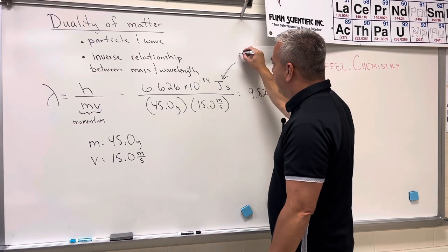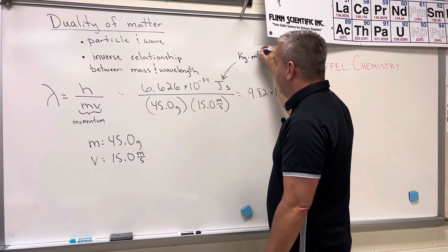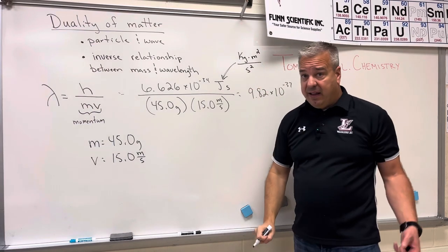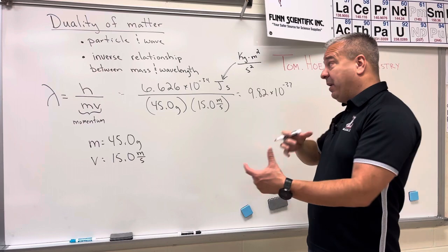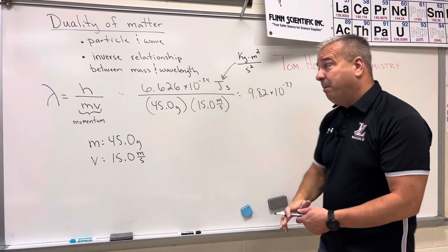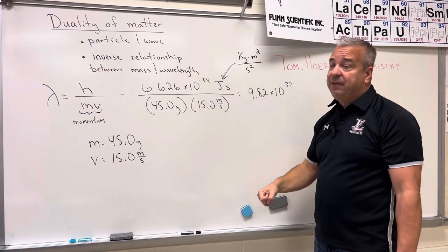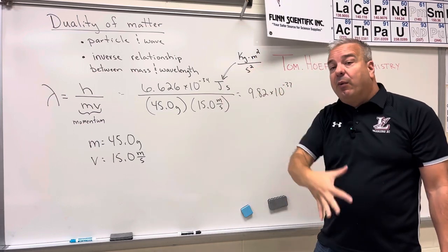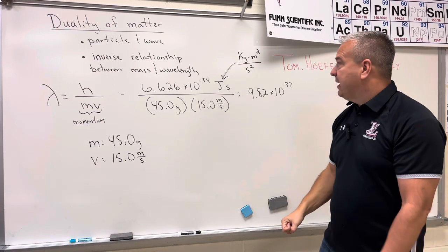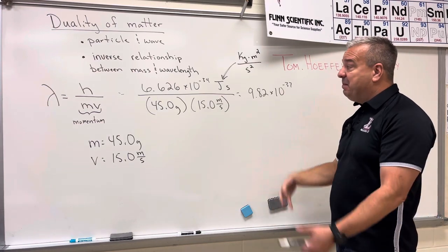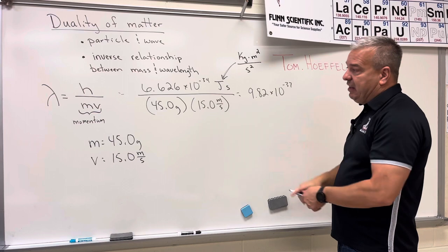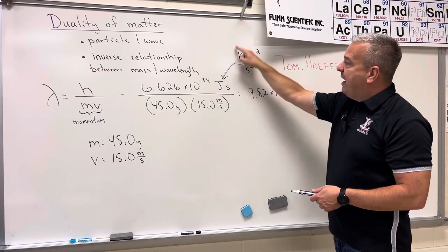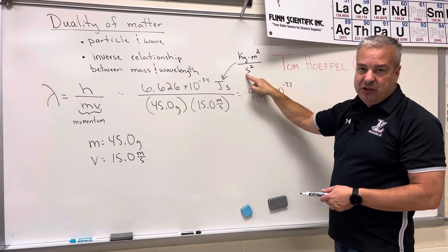So a joule is equal to a kilogram times meters squared over seconds squared. And if you don't know that, it probably doesn't surprise me, but in chemistry and in physics, you're going to have to know what these units are actually made up of. You have to know like what a Newton is made up of when you get to physics. So this is just the beginning of where you start to get unit inconsistency.